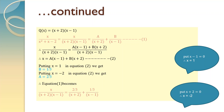Now we will put some values of x in equation 2 to find the values of a and b. One of the factors is x minus 1 — put x minus 1 equal to 0, so x equals 1. Substituting x equal to 1 in equation 2, we get the value of b as 1 upon 3. Now another factor is x plus 2 — put x plus 2 equal to 0, so x equals minus 2. Substituting x equal to minus 2 in equation 2, we get the value of a as 2 upon 3. Now substituting these values of a and b in equation 1, the fraction x upon x plus 2 into x minus 1 equals 2 upon 3 upon x plus 2 plus 1 upon 3 upon x minus 1.